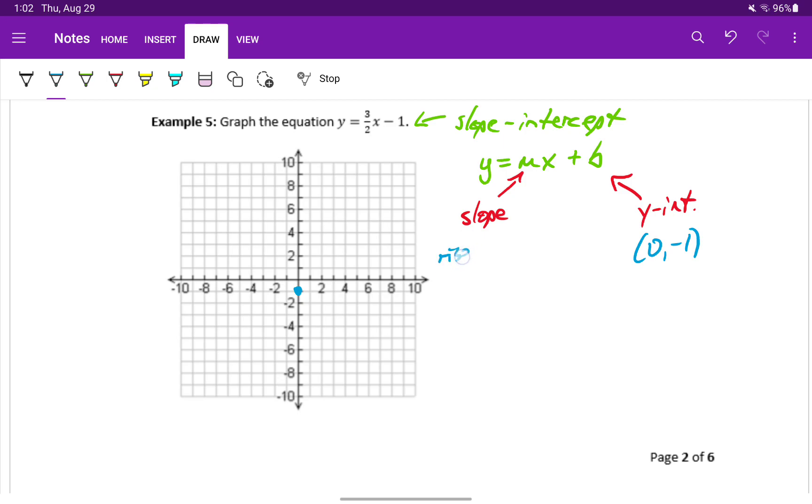And then we can use our slope to determine how to move from there. Slope is rise over run, meaning the number on top tells us how far to move up or down. In this case, we'll go up 3, and to the right, because the number on bottom tells us how far to move left or right, to the right 2 units.